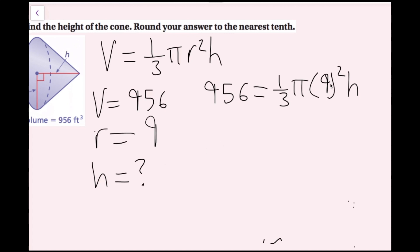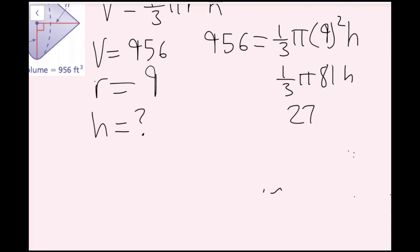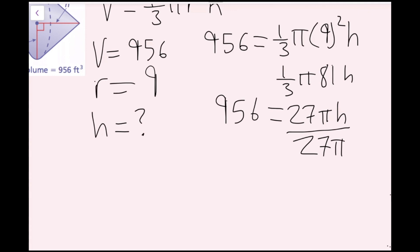Now I'll simplify. 9 squared is 81, so I have one-third times pi times 81 times h. One-third of 81 is 27, so I rewrite this as 956 equals 27 pi h. To solve for h, I divide both sides by 27 pi. These cancel, giving h equals 956 over 27 pi.